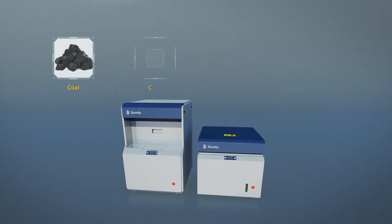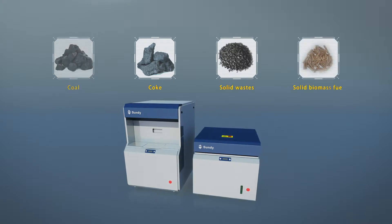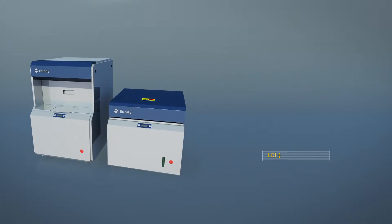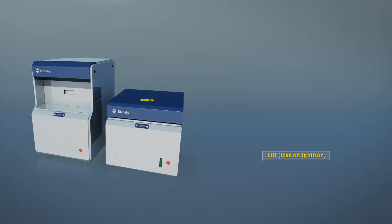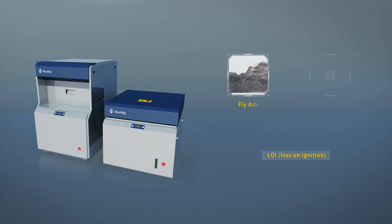In coal, coke, solid waste, and other solid biomass fuel. LOI, Loss on Ignition, can also be used for the calculation of carbon content in fly ash and clinker.